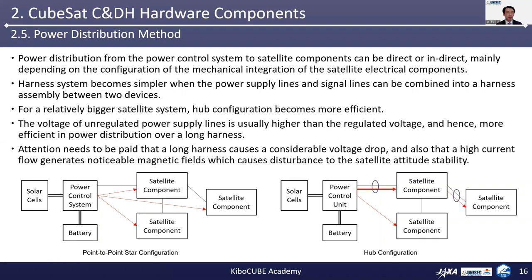The harness system becomes simpler when the power supply lines and signal lines can be combined into a harness assembly between two devices as a point-to-point connection. For a relatively bigger satellite system, hub configuration becomes more efficient. The voltage of the unregulated power supply line is usually higher than the regulated voltage and, hence, more efficient in power distribution over long distances through the harness.